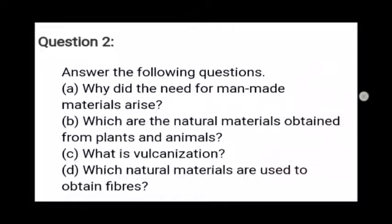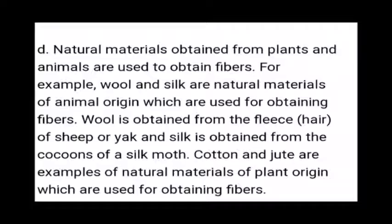D) Which natural materials are used to obtain fibers? Natural materials obtained from plants and animals are used to obtain fibers. Wool is obtained from the fleece — that is, the hair of sheep or yak — and silk is obtained from the cocoons of a silk moth. Cotton and jute are examples of natural materials of plant origin used for obtaining fibers.